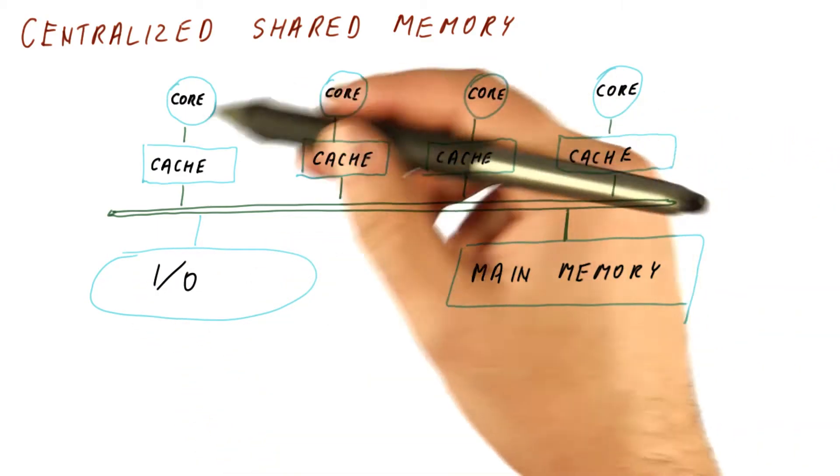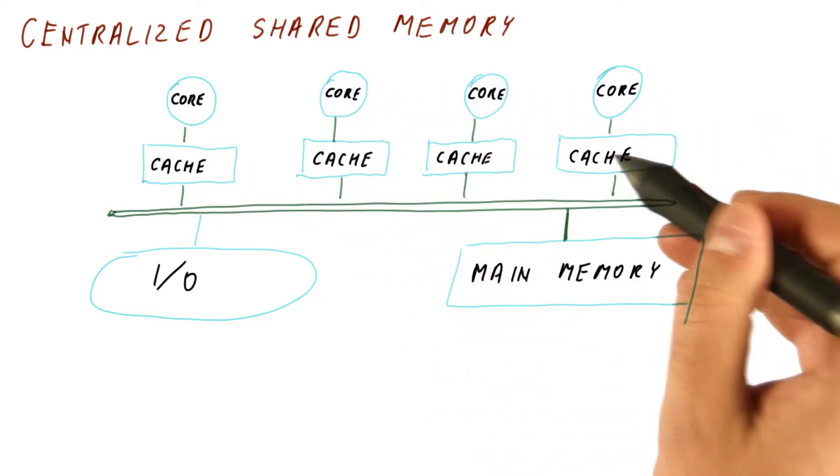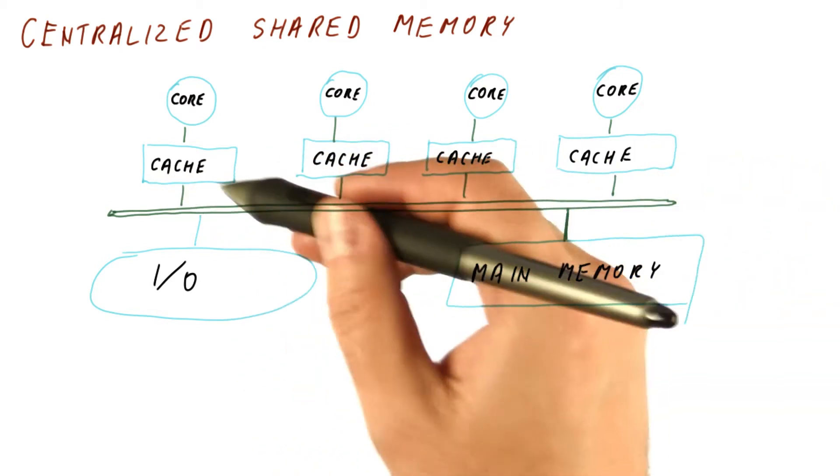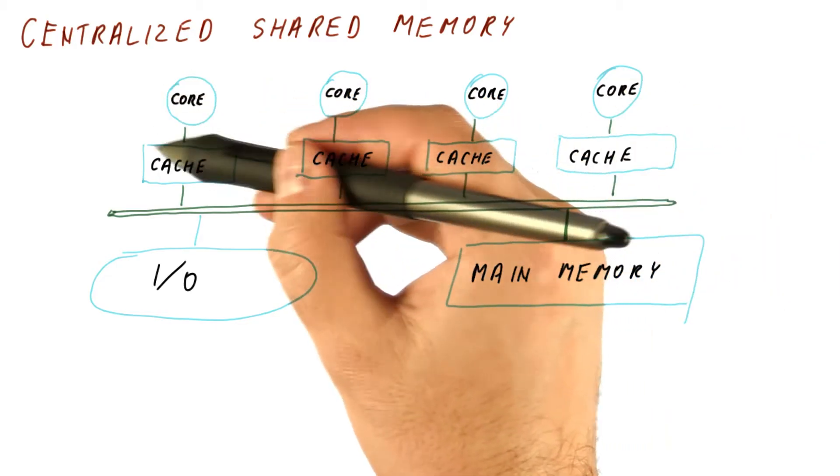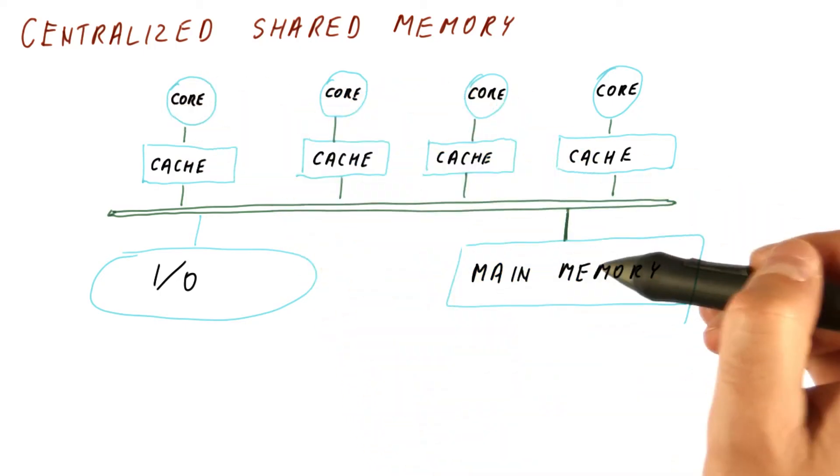These cores can share data by simply reading and writing the main memory. Assuming, of course, that these reads and writes go through the caches properly, and we will see that we can achieve that. So pretty much this core can send data to this core by writing to some memory location, and then this core reads it from there.